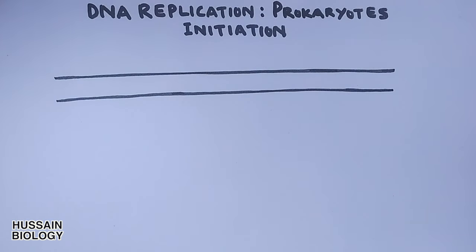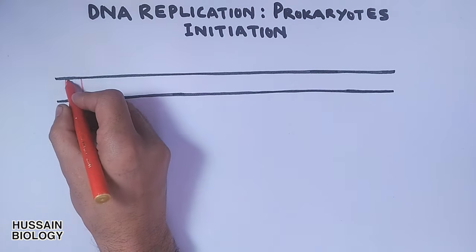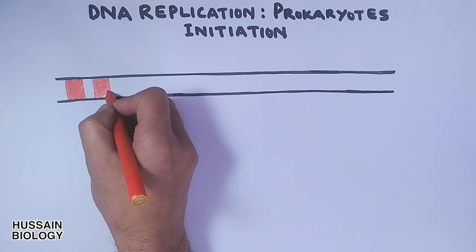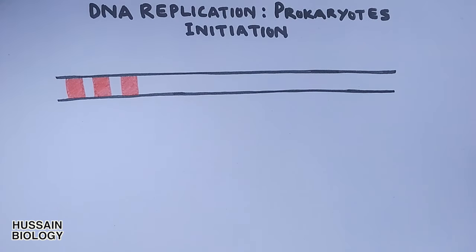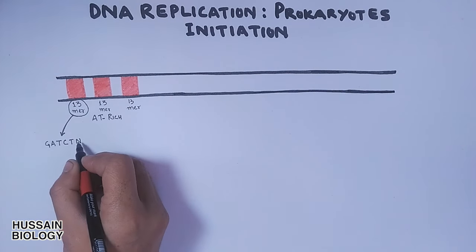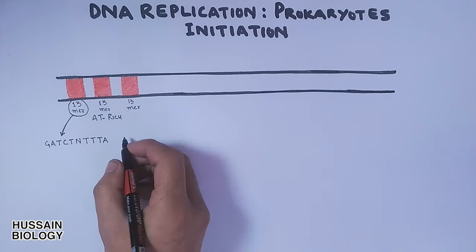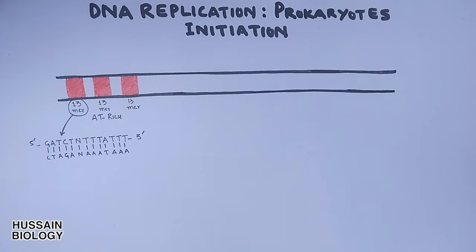Prokaryotic DNA replication begins at a specific site on the DNA molecule called the OriC site—the origin of replication in prokaryotes. In this diagram we can see the stretch of DNA having three red bands denoting a particular sequence. These red bands are specific sequences of bases called 13mer. There are three 13mer sequences on the OriC site—a sequence of 13 base pairs: guanine, adenine, thymine, cytosine, thymine, any nucleotide base, then three times thymine, then adenine, and again three times thymine, plus complementary bases.